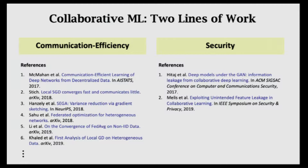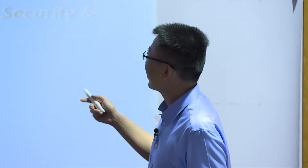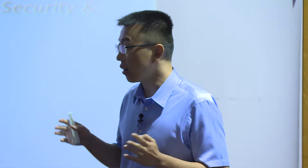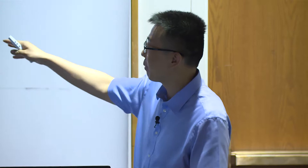Collaborative machine learning is a hot research topic. There are basically two research directions: one is communication efficiency—there have been a whole bunch of papers on communication-efficient federal learning. Another research direction is security in collaborative learning, which is now getting more attention. My talk is about security in collaborative machine learning.